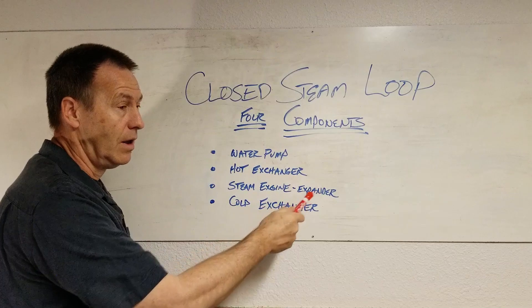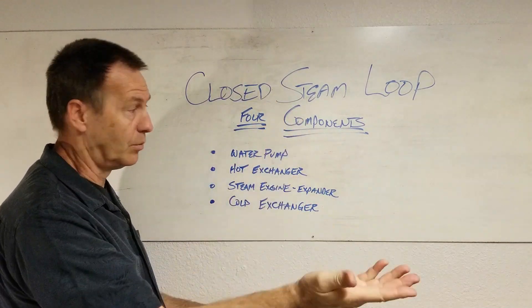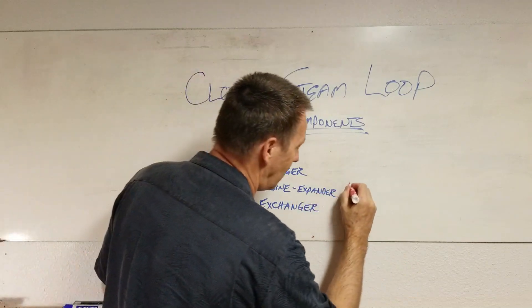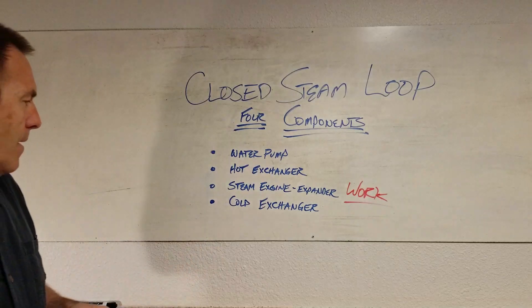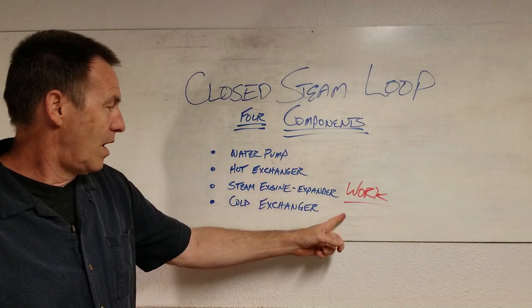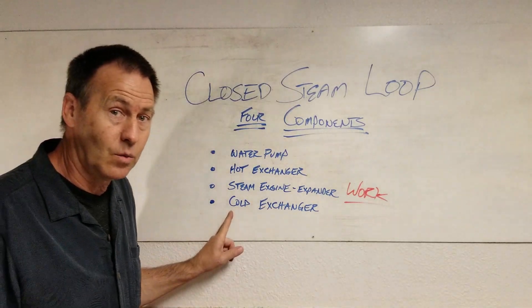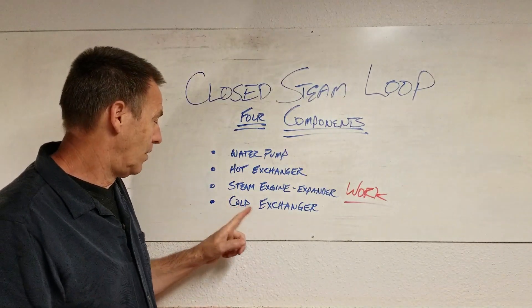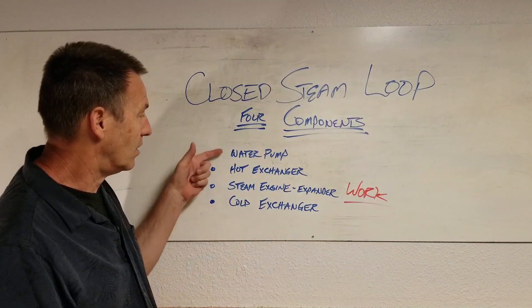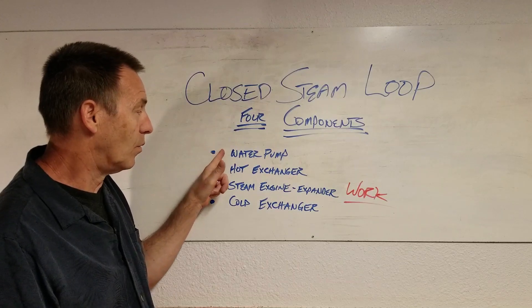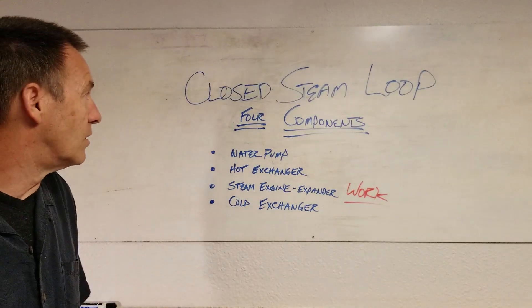This is the expander. Its job is to expand from high pressure steam to low pressure steam, and the purpose is for us to take work off of that engine. Once we have low pressure steam, it goes to the cold exchanger where it's going to condense into water. This is where we started — we have low pressure water, which feeds back through the water pump. And that's the cycle. These are the four components of the closed steam loop.